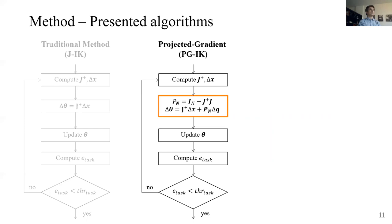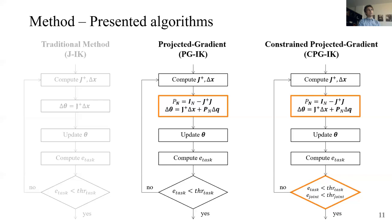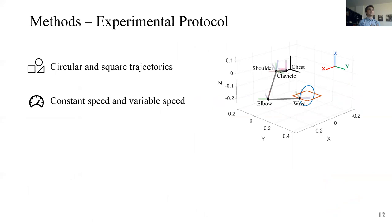With the projected gradient method, which is PGIK, we added the homogeneous solution with the previously described objective function. And with the constraint projected gradient, which is CPGIK, we also added an additional exit condition for the convergence loop. And this exit condition checks if the joint space error is below a certain tolerance.